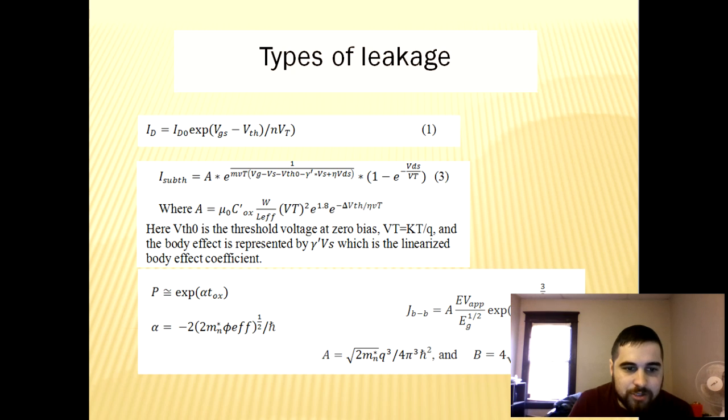Overall, one could conclude that sub-threshold current is going to vary exponentially with a changing gate to source voltage, and it will more importantly vary exponentially with a varying threshold voltage, which is on a constant downward trend over time as CMOS is scaled.